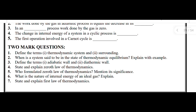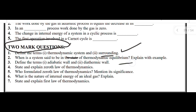Now I am going to discuss two-mark type questions in the thermodynamics chapter. The first question is: define the terms thermodynamic system and surroundings. Next: when is a system said to be in the state of thermodynamic equilibrium? Explain with an example. Next: define the terms adiabatic and diathermic wall.